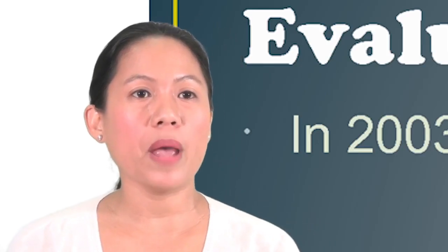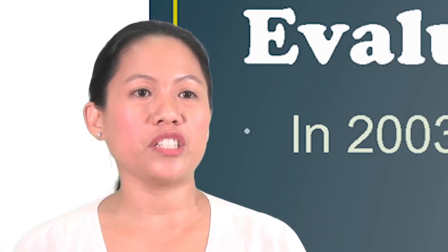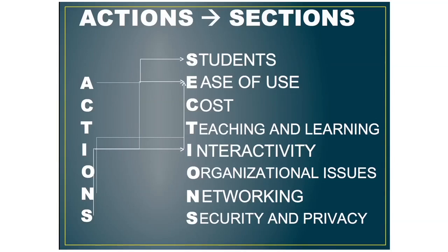So why did he switch from ACTIONS to SECTIONS? A used to stand for Access, which now became Students, because he thought it would be best to evaluate student demographics, which would include Access. I used to be Interactivity and Ease of Use, and he separated them because he thought Ease of Use should have its own category.